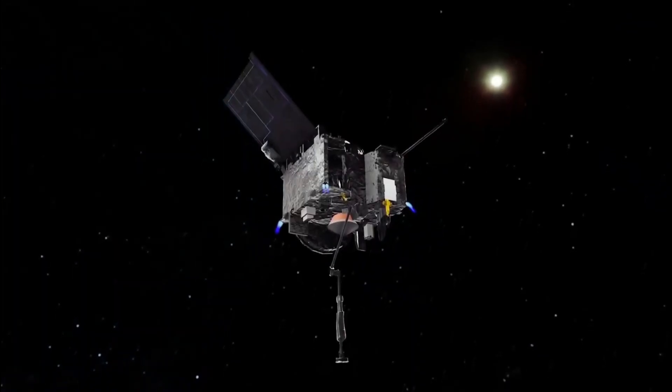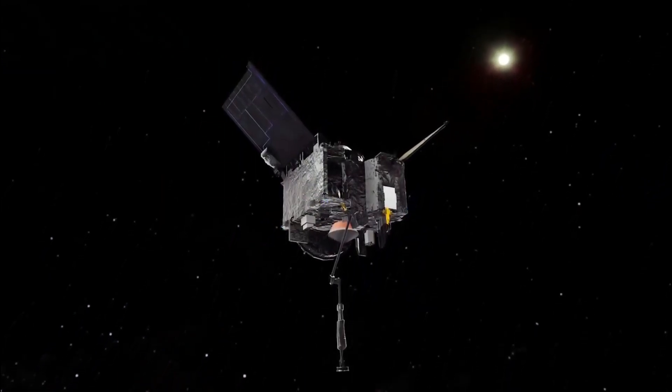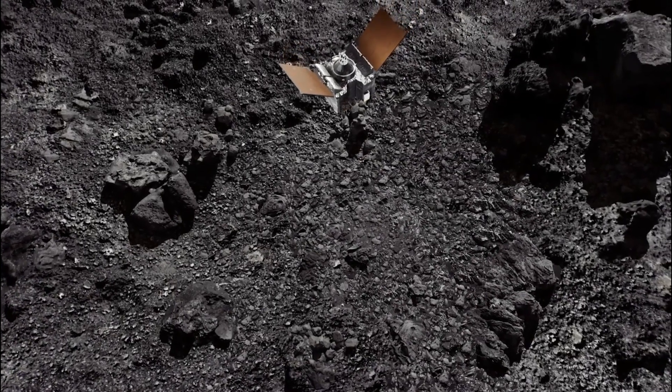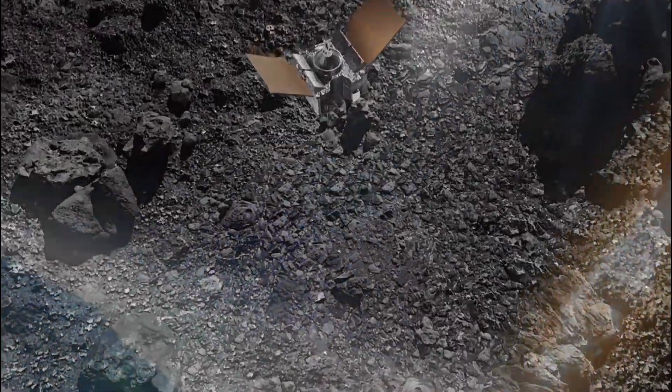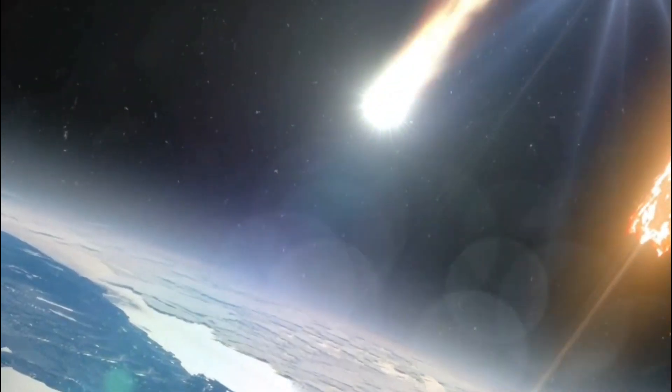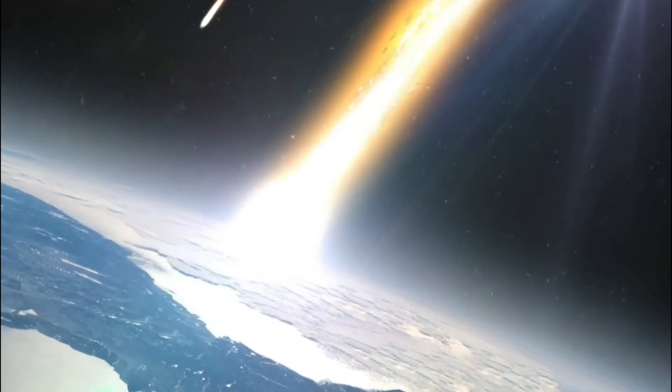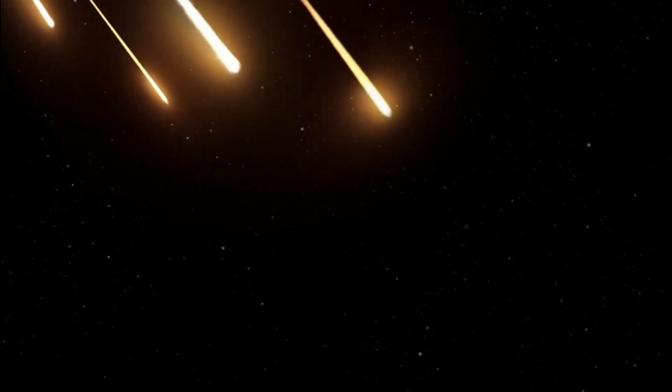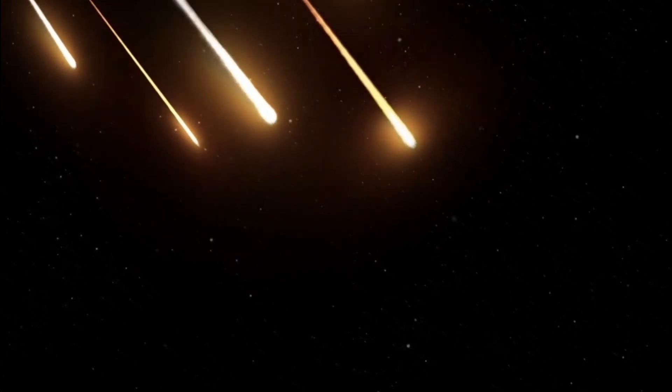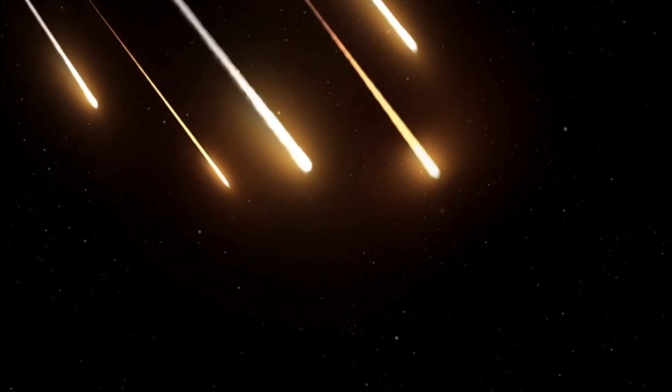If the space rock, which is estimated to be 11.5 to 28 feet, or 3.5 to 8.5 meters across, had headed for Earth, it would have transformed into a fireball once it entered the atmosphere and disintegrated. Any remaining debris would have fallen to the ground as small meteorites, according to the Space Agency.